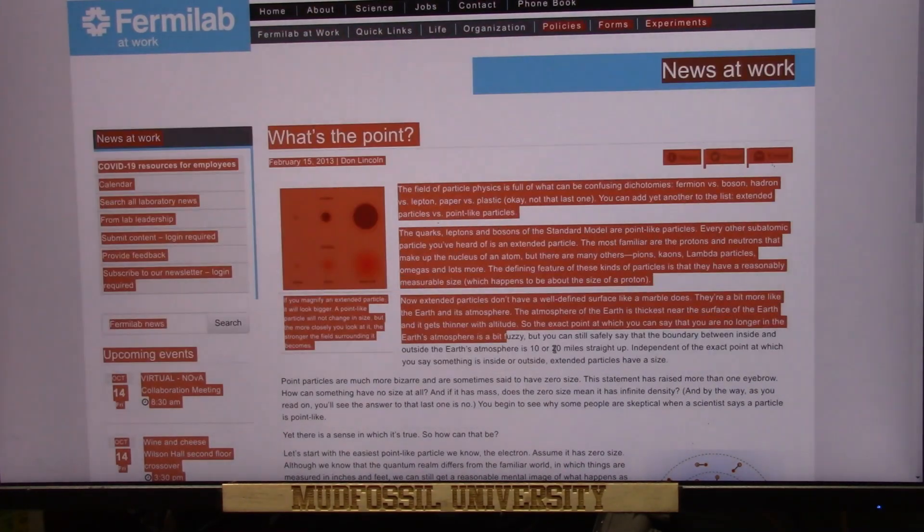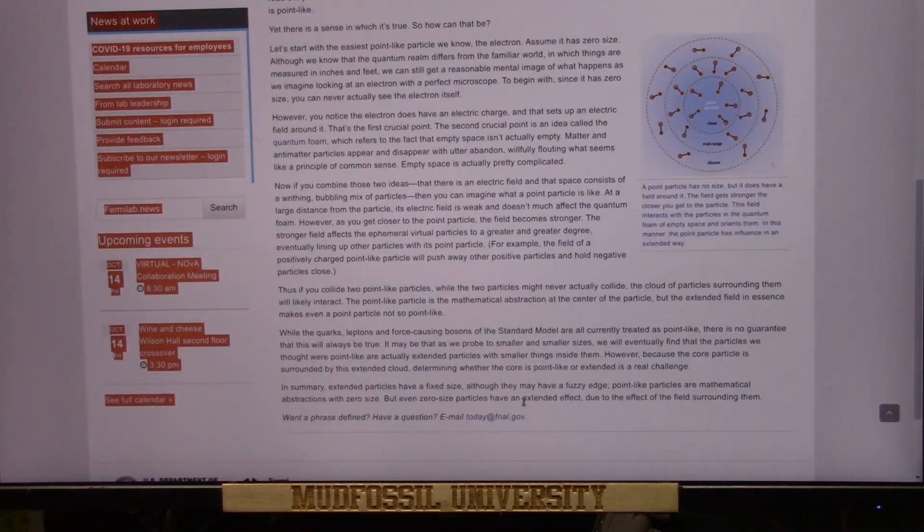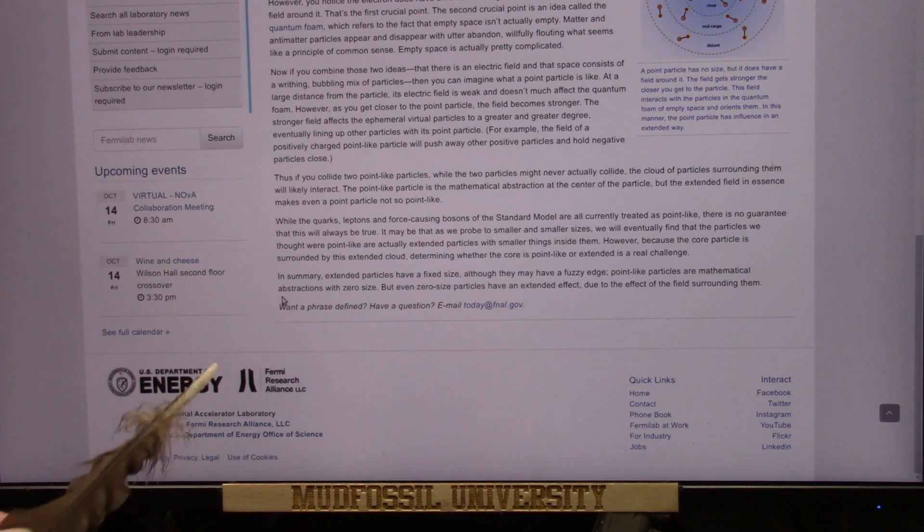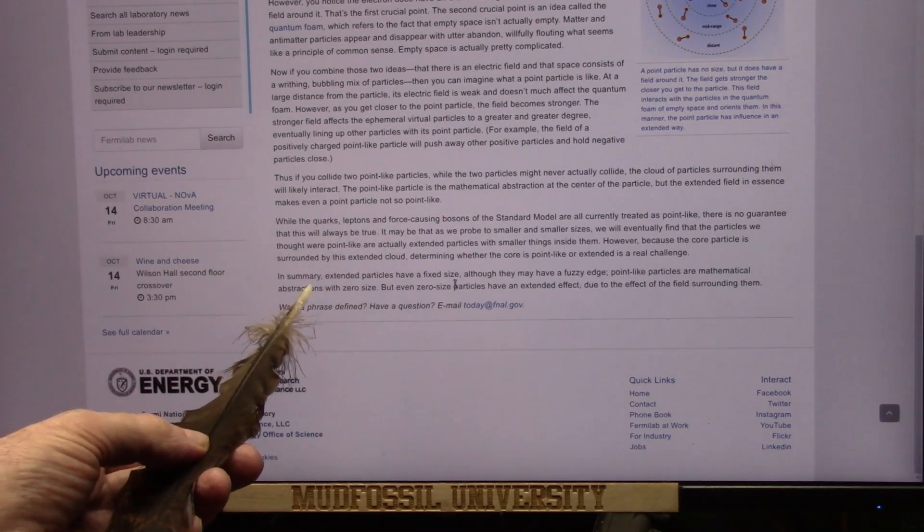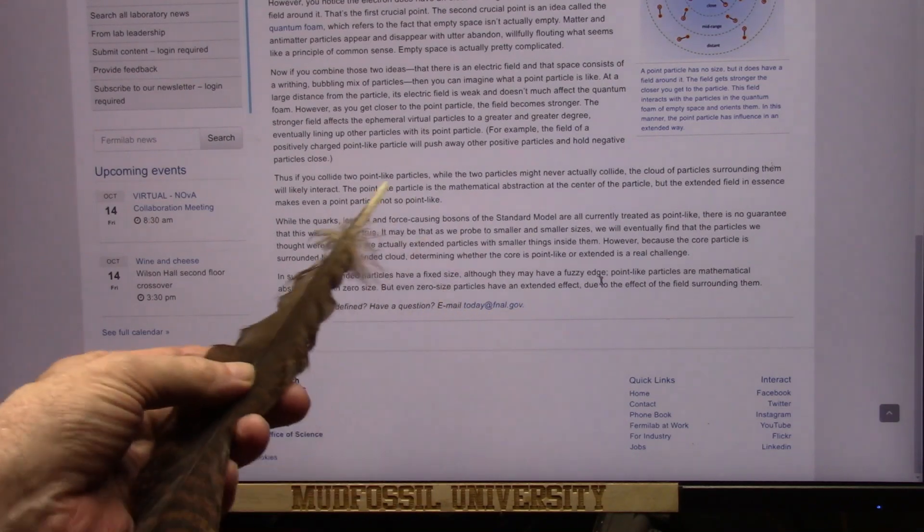And they react precisely the way Don Lincoln says. The fixed size one, the black one, is the muon neutrino. And it might have a fuzzy edge, which it does.